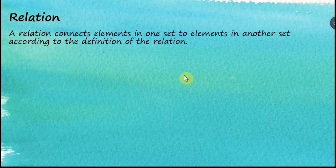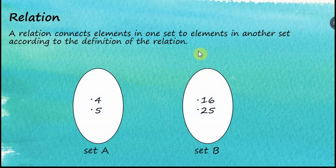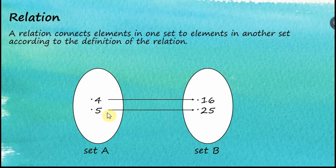So what is a relation? A relation connects elements in one set to elements in another set according to the definition of the relation. For example, if set A has 4 and 5, and set B has 16 and 25, the numbers in set B are the squares of the numbers in set A. So the relation between these two sets is 'the square of.'